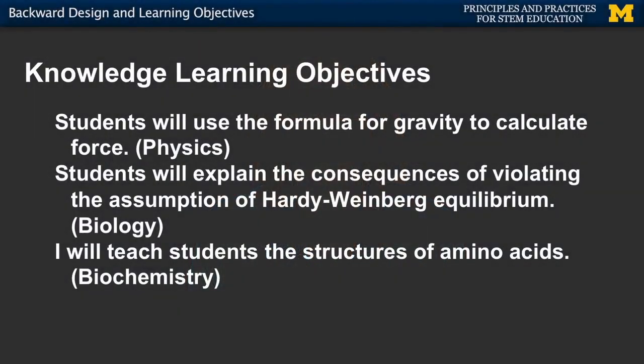Let's start with knowledge — what knowledge do you want students to have? For example, in an intro physics course, you might expect your students to know a formula that calculates the force of gravity. In a biochemistry course, you might expect them to know the structure of amino acids. Those are just a couple examples of factual knowledge an instructor might expect students to have. We'll look at how we can refine these learning objectives later in the video. Coming up with knowledge-based objectives is often relatively easy.